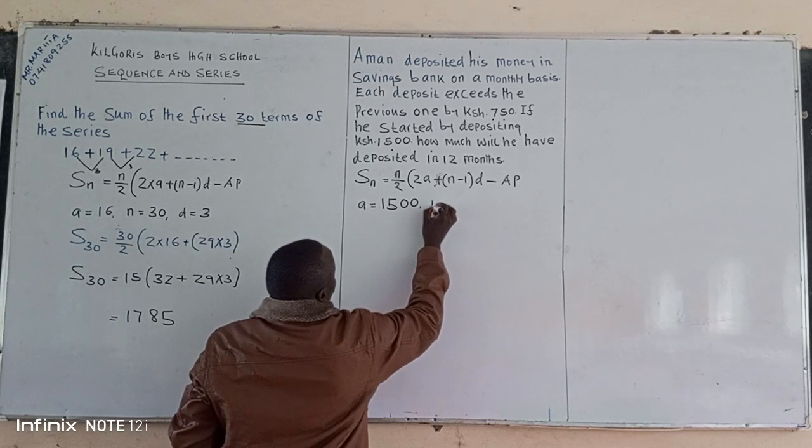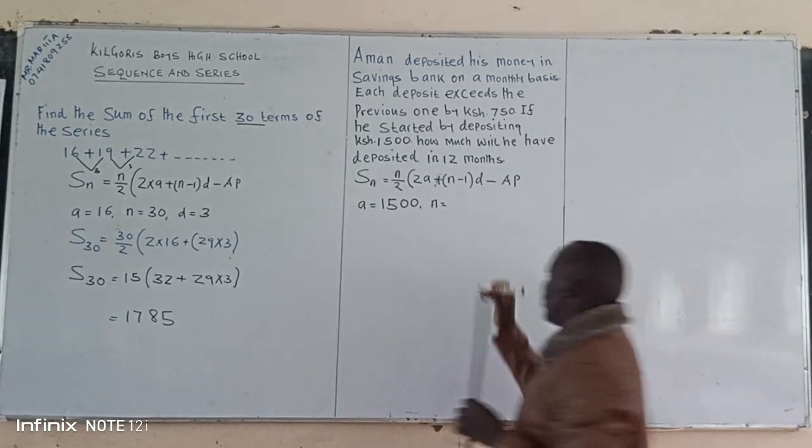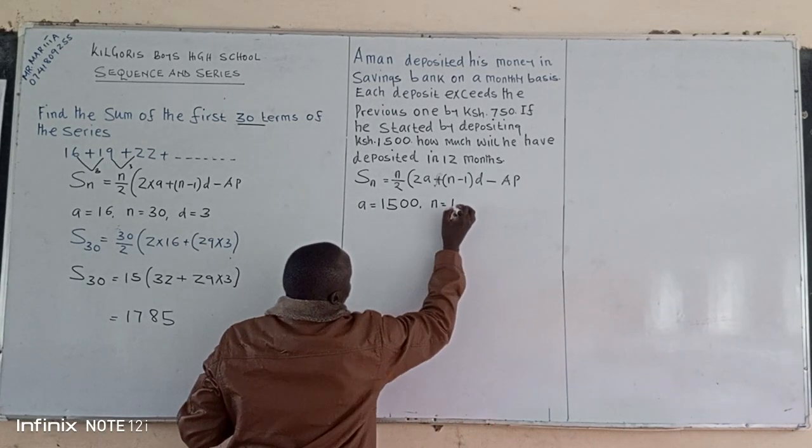Then we have our n. In that case, we can have our n here in the 12 months, so n is equivalent to 12.